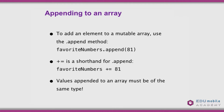To append to an array, we add something to the end. We use the append method — favoriteNumbers.append(81) adds 81 to the end of the array. We can also use the += operator as shorthand — favoriteNumbers += [81] does the same thing. Values appended to an array must be the same type as the existing elements, so we can't append the string "red" to favoriteNumbers.